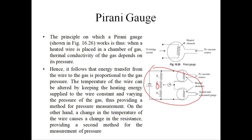Next we will talk about the Pirani gauge. The principle on which the Pirani gauge works is: when a heated wire is placed in a chamber of gas, thermal conductivity of the gas depends on its pressure. Hence, it follows that energy transfer from the wire to the gas is proportional to the gas pressure. The temperature of the wire can be altered by keeping the heating energy supplied to the wire constant or varying the pressure of the gas, thus providing a method for pressure measurement.